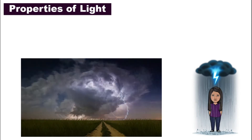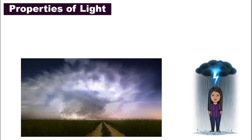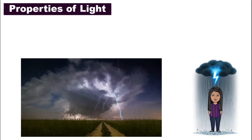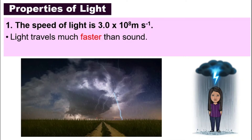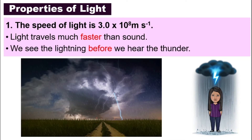Have you ever noticed during a thunderstorm — do you see the lightning first or do you hear the thunder first? The speed of light is actually 3.0 times 10 to the power of 8 meters per second, which is 300,000,000 meters per second. Because light travels so much faster than sound, we will see the lightning first before we hear the thunder.